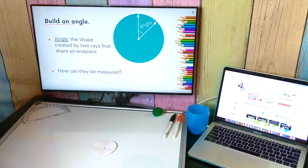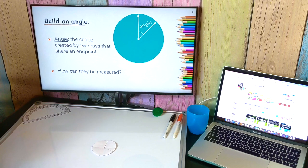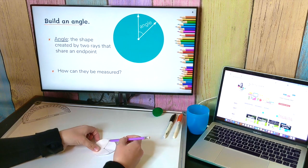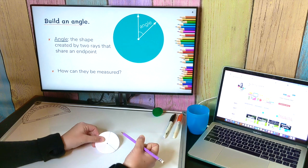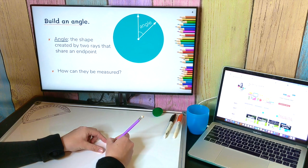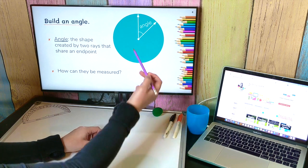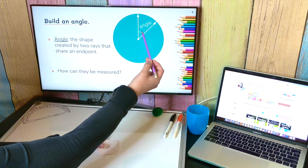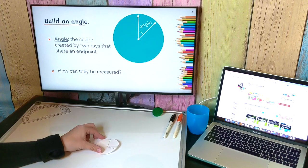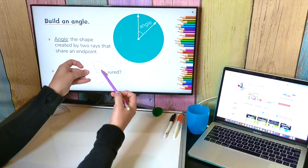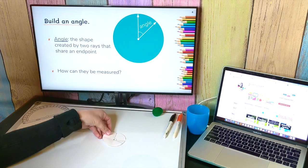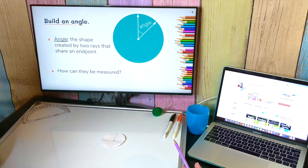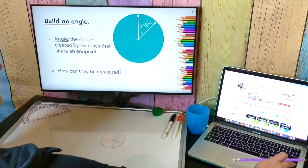So essentially what you just did is you created an angle. An angle is that shape that's created when you have two rays that share an end point. So this section right here on my paper is an angle, just like this section right here on my digital version is an angle. But the thing is, as you notice here, angles can be different from each other. So we need a way to measure them. So let's look at how we can measure these angles.